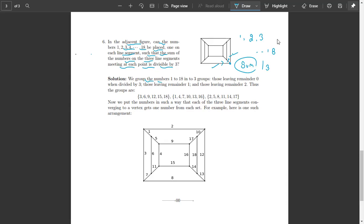We group the numbers 1 to 18 in three groups: which have remainder 0, which have remainder 1, and which have remainder 2. Then 3, 6, 9, 12, 15, and 18 are the numbers which have remainder 0.